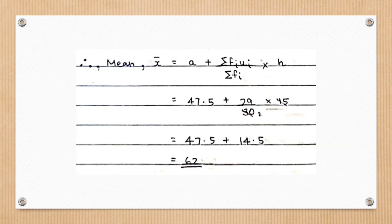Finally, we find the mean using the step deviation method formula. x-bar equals a plus the sum of fi·ui divided by the sum of frequency, multiplied by h. Substituting a as 47.5 and the other values, we get the mean as 62.